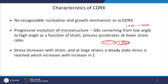As we have seen in dynamic recovery, stress increases with strain and at large strains a steady-state stress is reached, which increases with increase in the Zener-Hollomon parameter Z. So the flow stress curve in CDRx will be similar to dynamic recovery — it will have a steady-state condition, and with increase in Z you will have higher stresses, giving multiple curves in this direction.